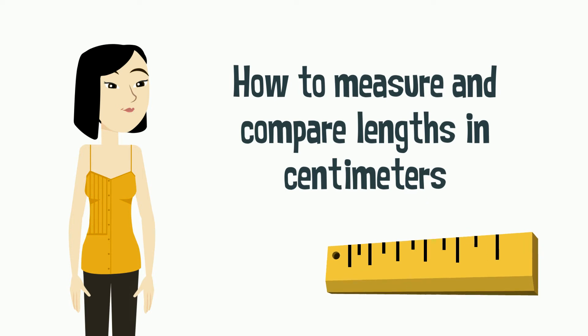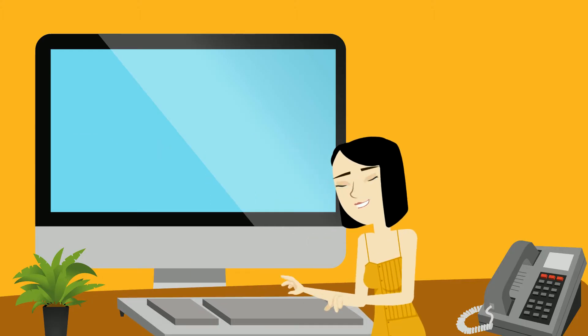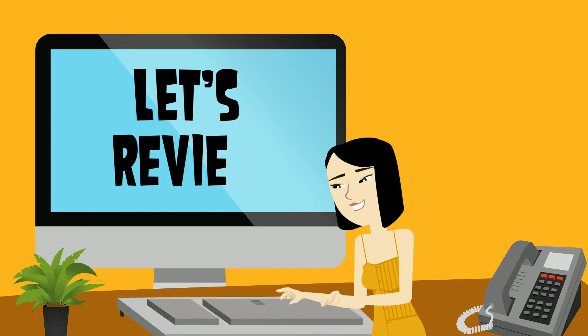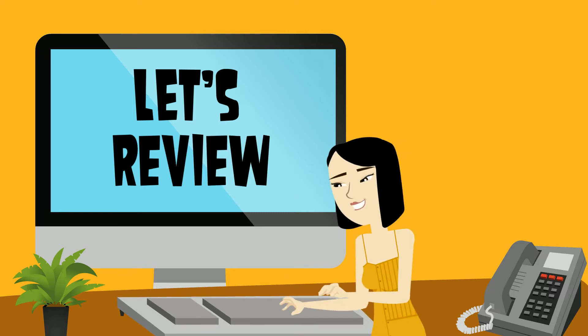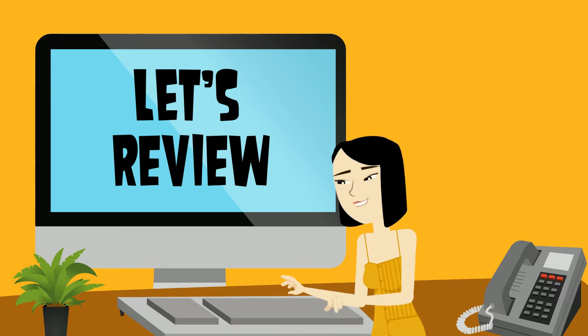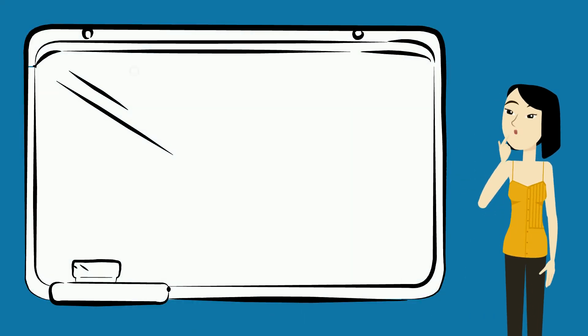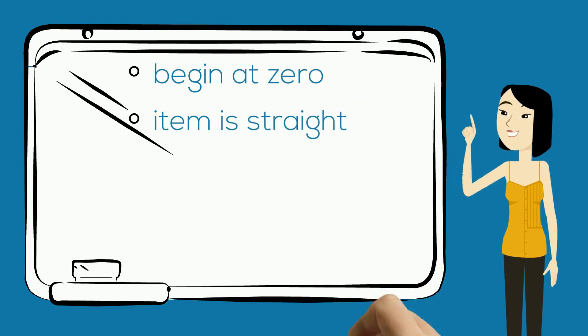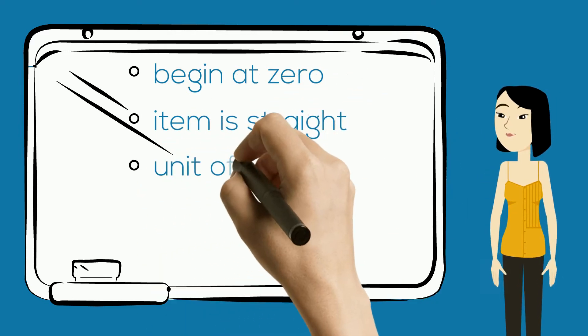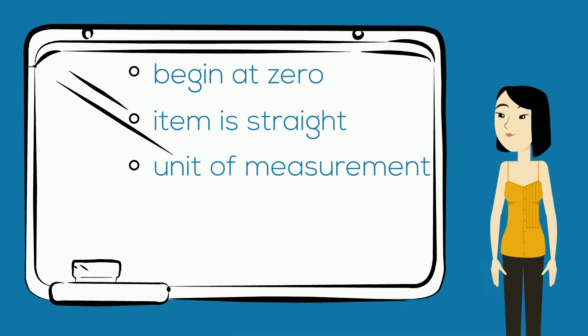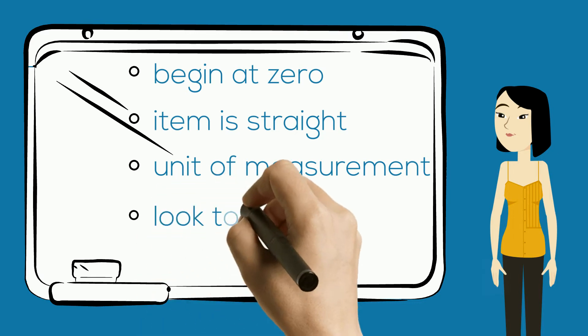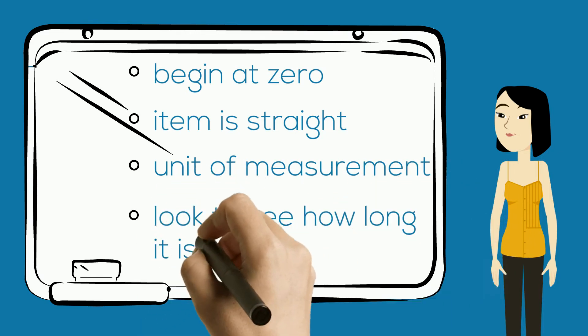Before we begin, let's review how to properly determine the length of an object in centimeters. We need to make sure we begin at zero when lining up the object. We must make sure the item is straight and we must pay attention to the unit of measurement to make sure we are using centimeters. Then we can look to see how long the object is.